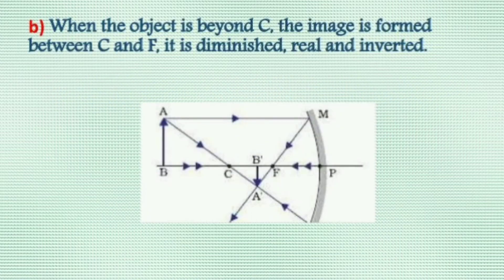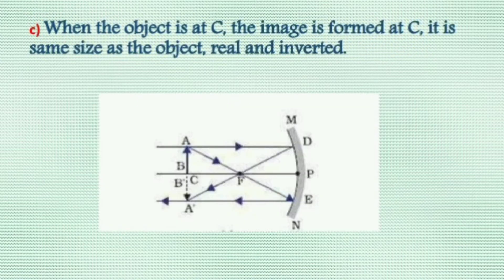Case two: object lies beyond the center of curvature. In this case, the image is real, inverted, and diminished. Case three: object lies at the center of curvature. In this case, the image is real, inverted, and of the same size as the object.